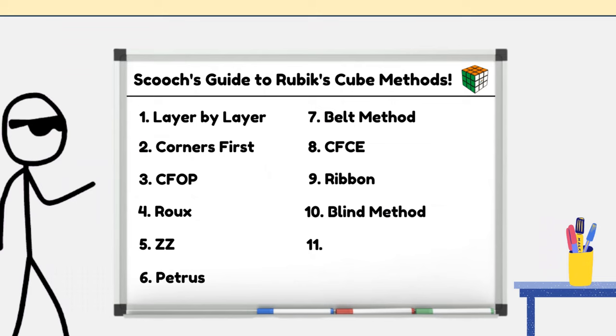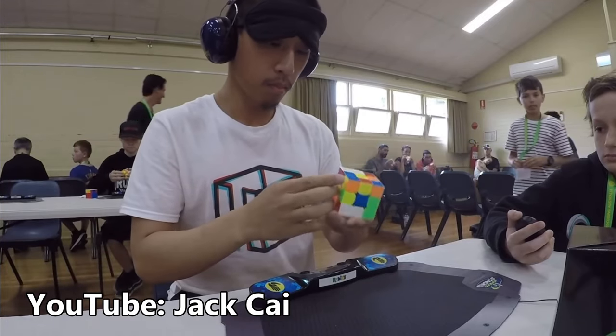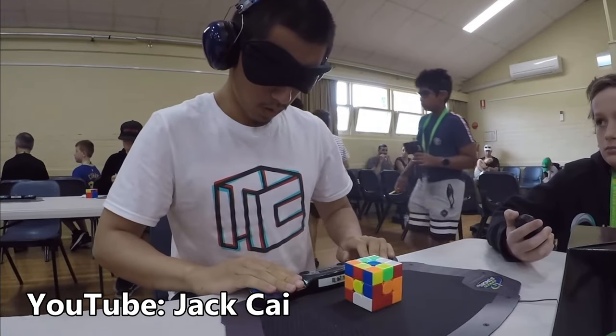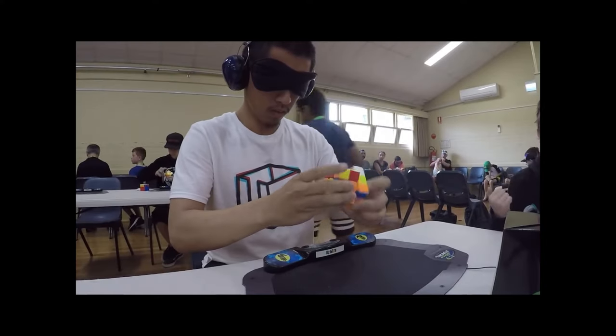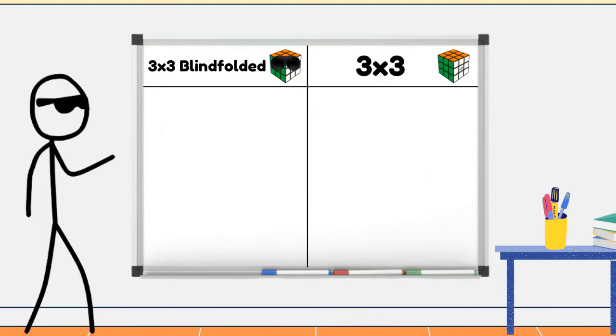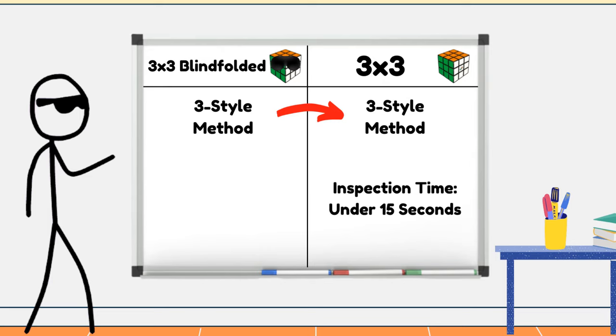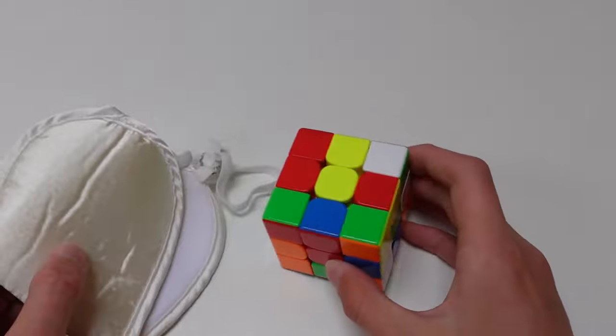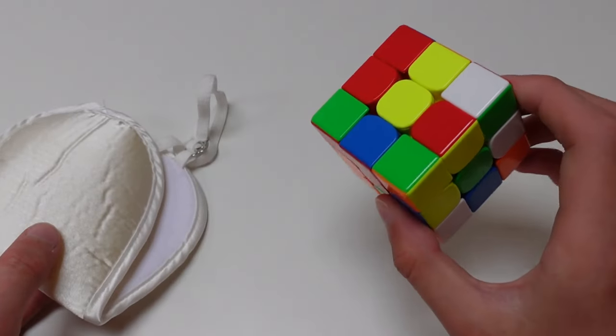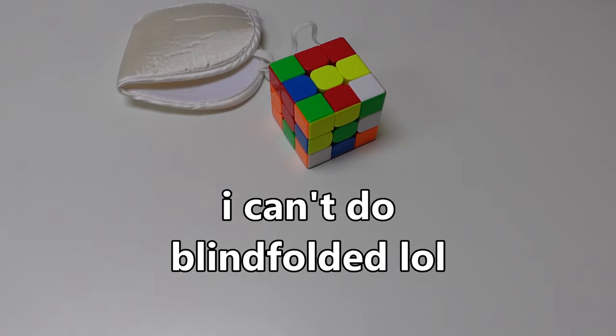Number 10, blind method. The blind method, or the one-look method, is a method used by Jack Cai, and does anyone else even use this method? I don't know. It is where you take one of the methods used in the blindfold event, such as the three style method, and use it in the normal 3x3 event. In the 3x3 event, you get 15 seconds of inspection time. The best blindfold solvers only need about 7 seconds to inspect the cube, before putting on their blindfold and solving it. So it is very much possible to one-look a Rubik's cube. Despite this, it is not as fast as other methods, such as CFOP.